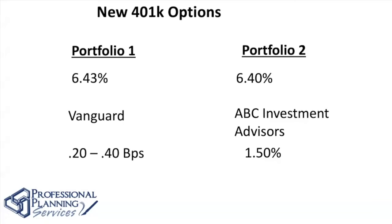Let's be honest — when we look at our 401k options, every single person goes through the prospectuses, looking at one-year, three-year, five-year, ten-year, and since-inception rates of return, then picks accordingly. I've been doing this almost 30 years. Typically, we look at the top three or four funds with the highest average rate of return for the last 10 years or since inception, pick those, diversify among them, and feel like we've reduced our risk. But is that really the best course of action?